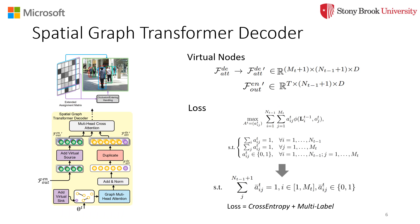The spatial graph transformer decoder takes the output from the encoder and the candidate's graph as inputs to estimate the final assignment matrix. In order to model the special events during tracking, we add additional features for the virtual source and virtual sync nodes. We use cross-entropy loss and multi-label loss as supervision signals to train the TransMOT network in an end-to-end style.